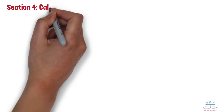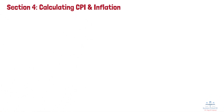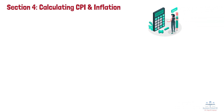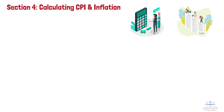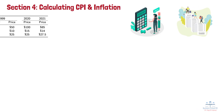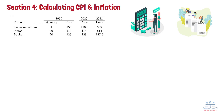Section 4: Calculating CPI and Inflation. Let me walk you through exactly how the CPI and inflation are calculated — it's like creating a giant shopping receipt for the entire economy. For purposes of this example, we assume that the market basket has only three products: eye examinations, pizzas, and books.